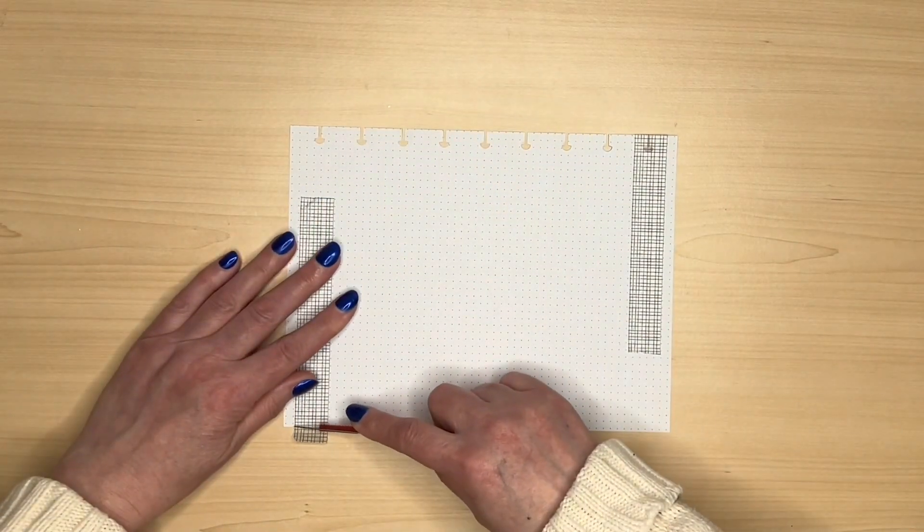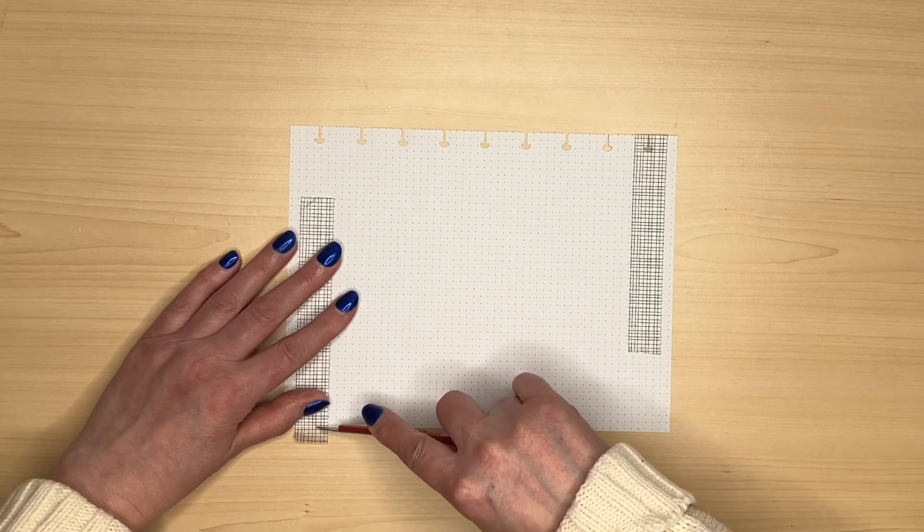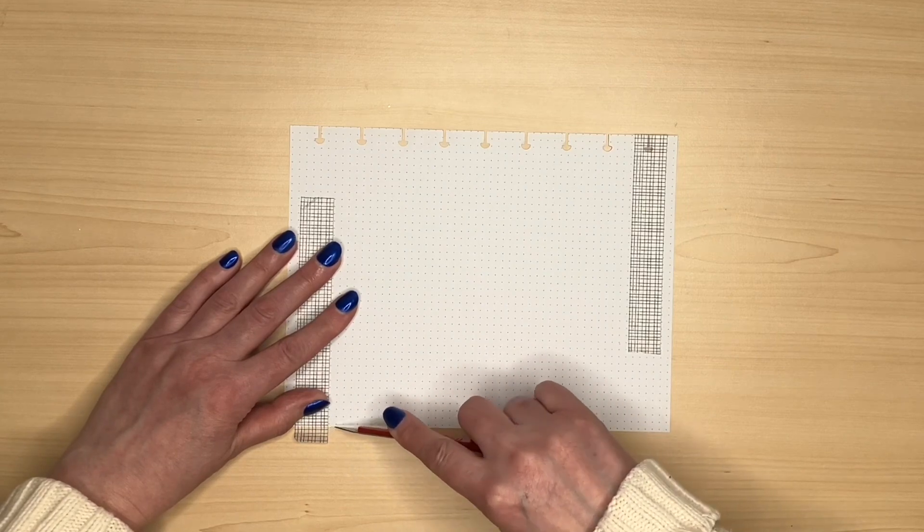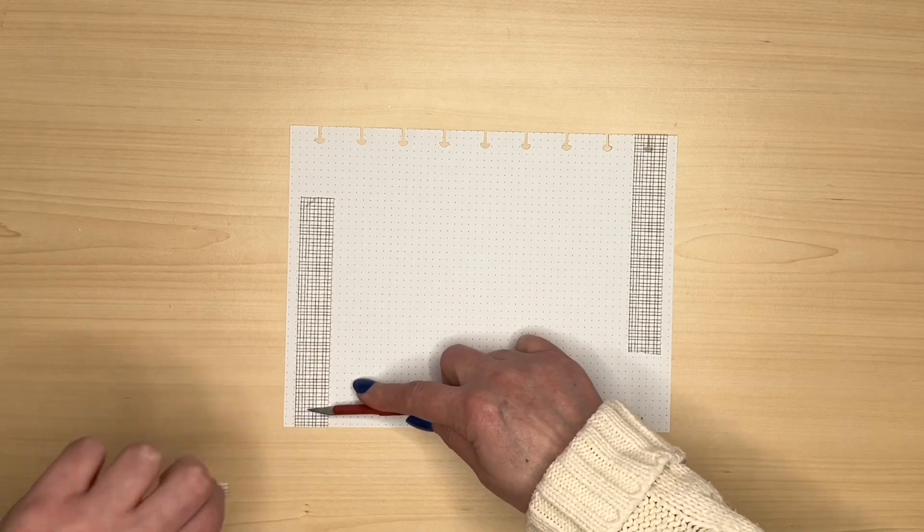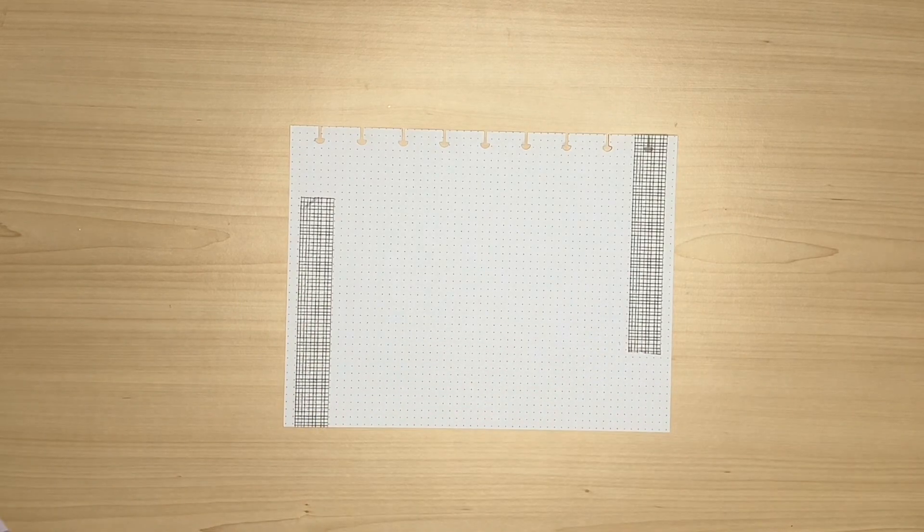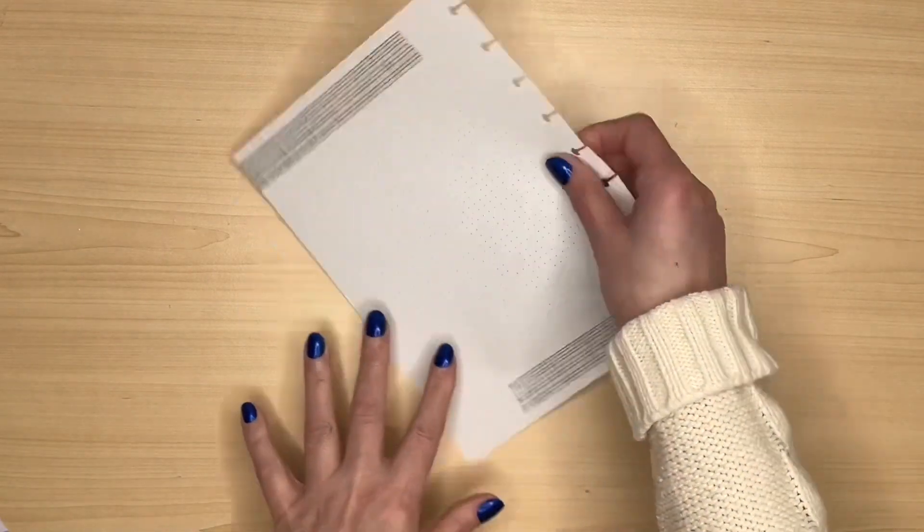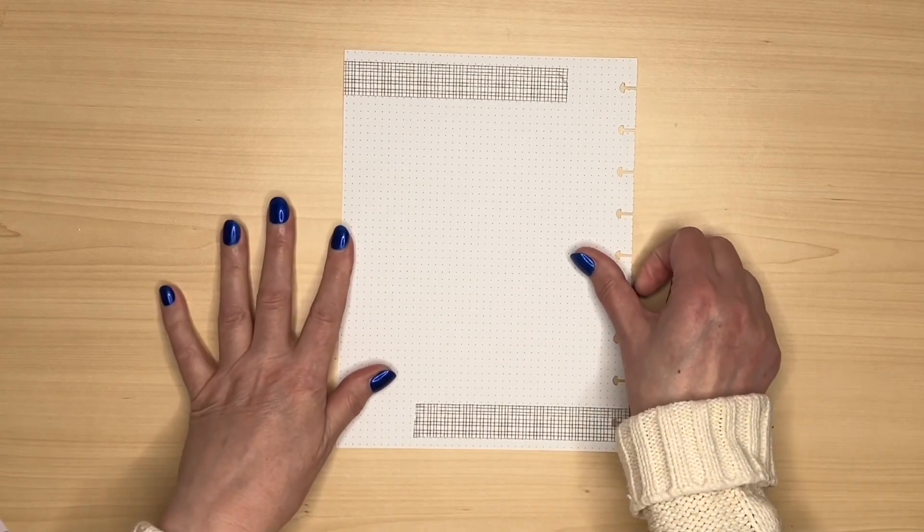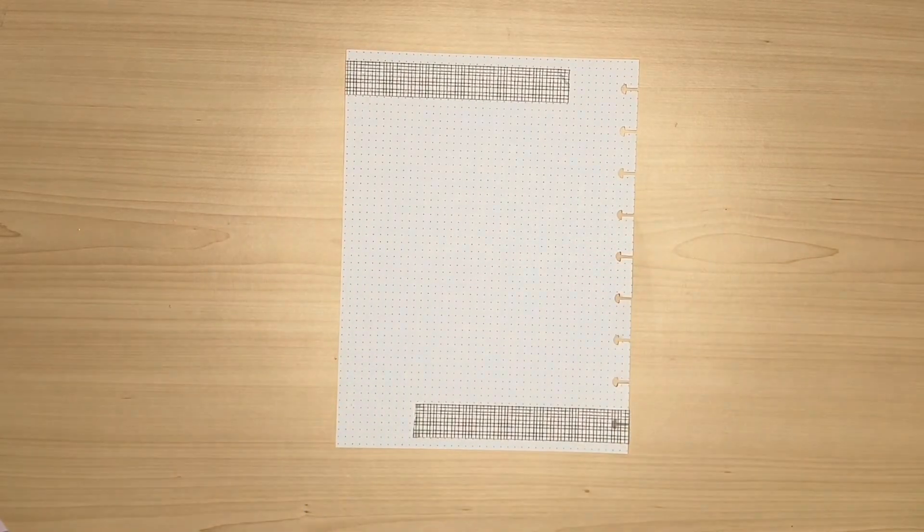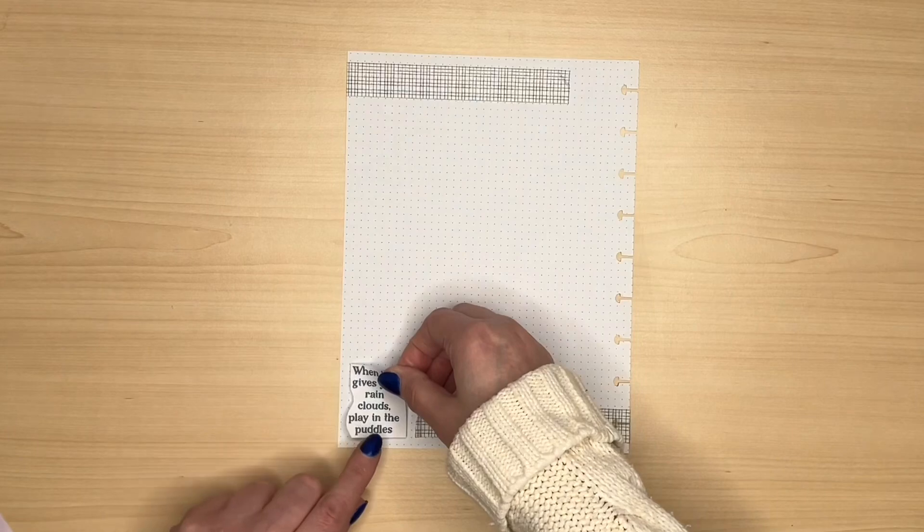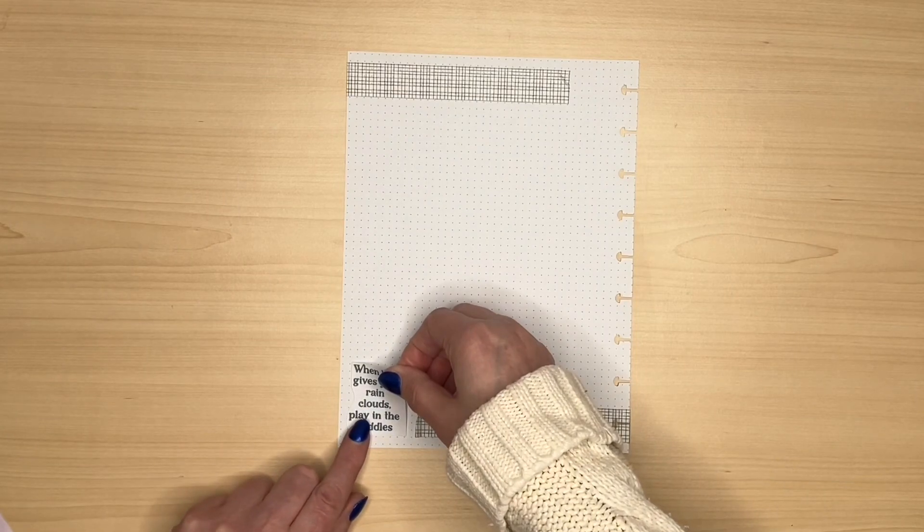As I don't have a cutting machine I do need to cut the stickers out by hand but of course the good thing about printables is that you can print them out as many times as you like so these stickers may well make another appearance in either my classic or skinny classic planner. It took me about five minutes to cut everything out from that one sheet.